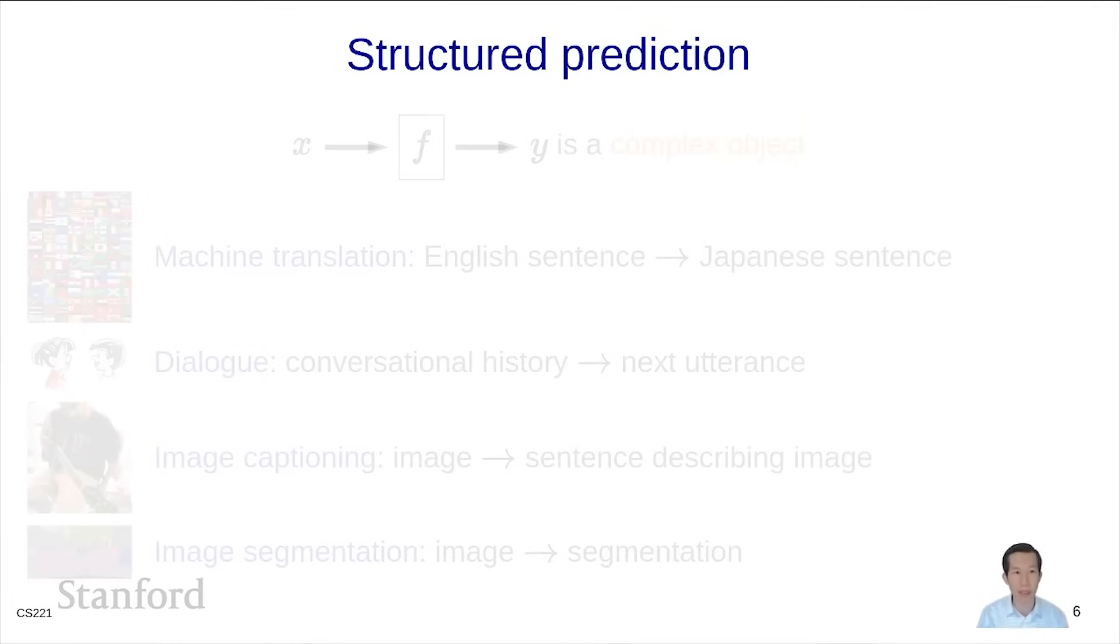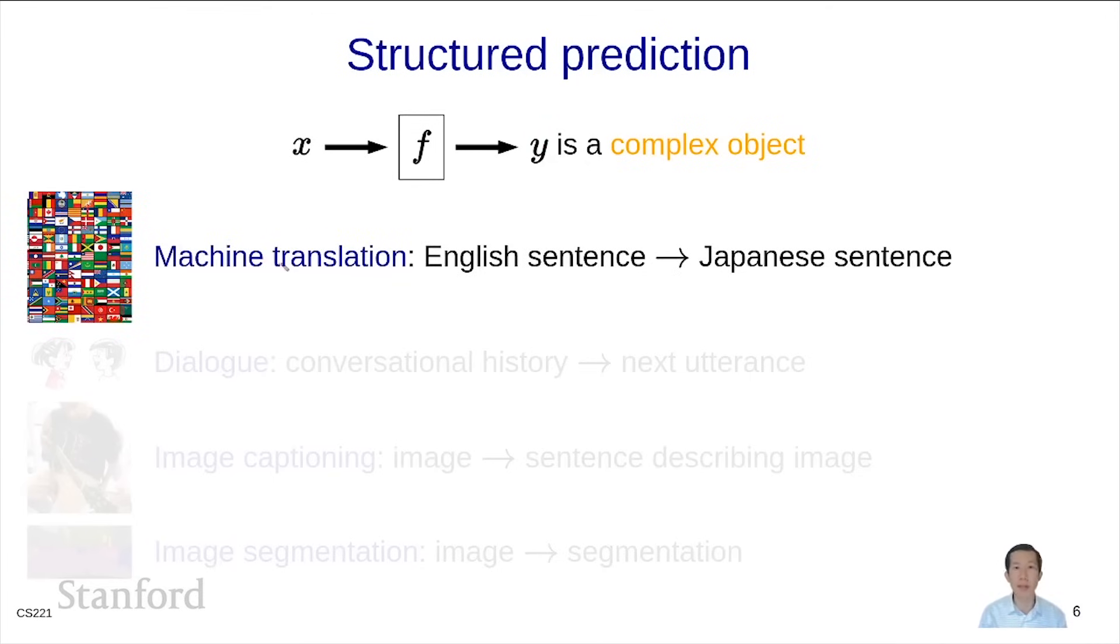The final thing we're going to talk about is structured prediction. In structured prediction, it's a bit of a catch-all, and y is simply a complex object. Some examples include machine translation, where x, the input, is a sentence in one language, and y is its translation in another language.